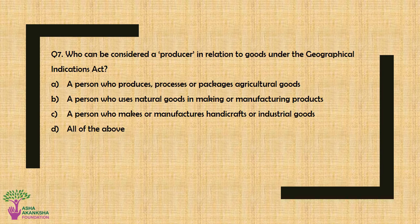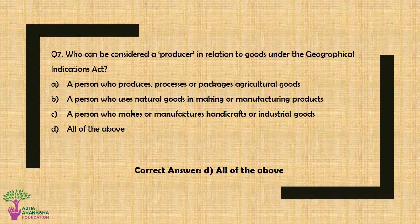Question No. 7: Who can be considered a producer in relation to goods under the Geographical Indications Act? Option A: A person who produces, processes or packages agricultural goods, Option B: A person who uses natural goods in making or manufacturing products, Option C: A person who makes or manufactures handicrafts or industrial goods, Option D: All of the above. The correct answer is Option D — All of the above.